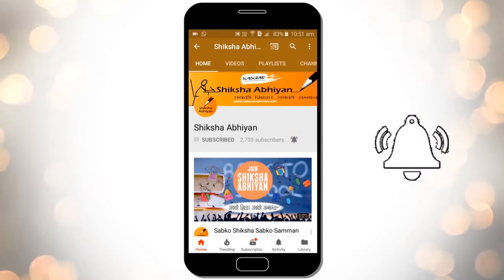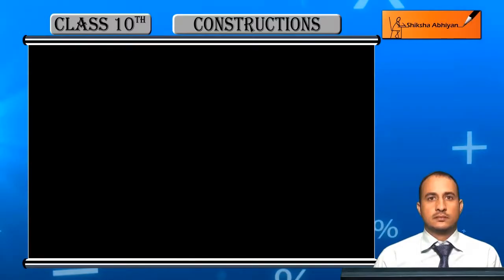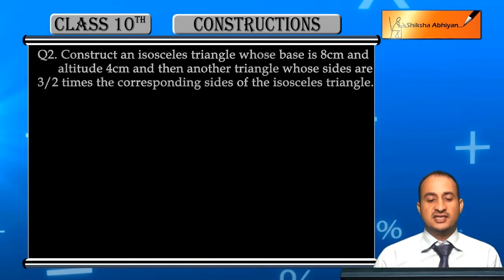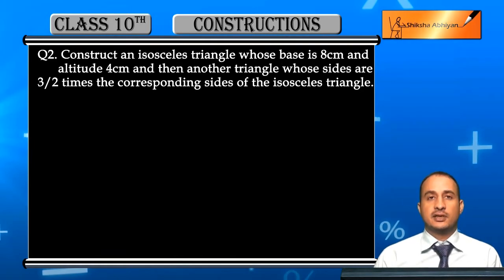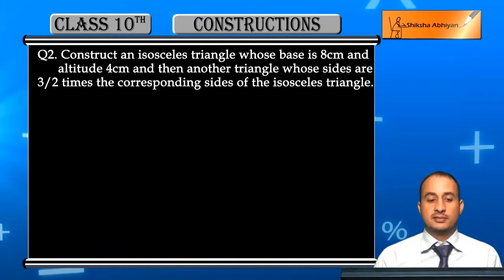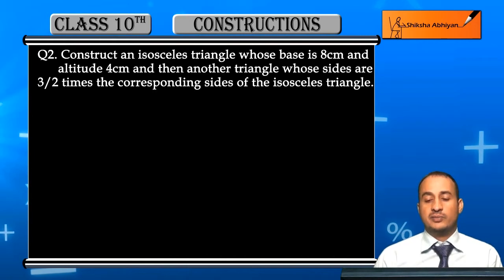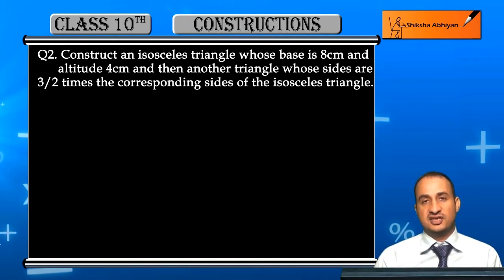Now students, see the second question. The question is: construct an isosceles triangle whose base is 8 centimeters and altitude is 4 centimeters, and then construct another triangle whose sides are 1/2 times the corresponding sides of the isosceles triangle.